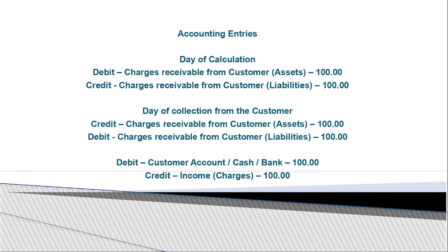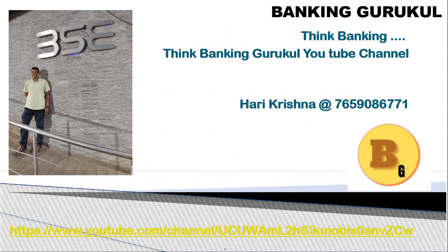We then debit the customer account, cash, or bank — for example if the customer has given cash or a cheque — and credit the income account. So now you know the difference: on actual basis, we book income on the day of calculation; on accrual basis, we book the income when the customer pays. Thank you friends — if you like the video, please subscribe and share with your friends.